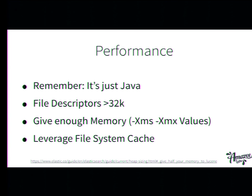Also be sure that you have enough memory, but not more than 30.2 gigabytes — there's a link which explains why, just don't go over 30.2. And try to leverage the file system cache, because everything is based on Apache Lucene and it leverages the file system cache. The rule of thumb is to use half of the memory you have on the server for Elasticsearch, and the other half will be file system cache. I will publish a small blog post tomorrow with all the references.